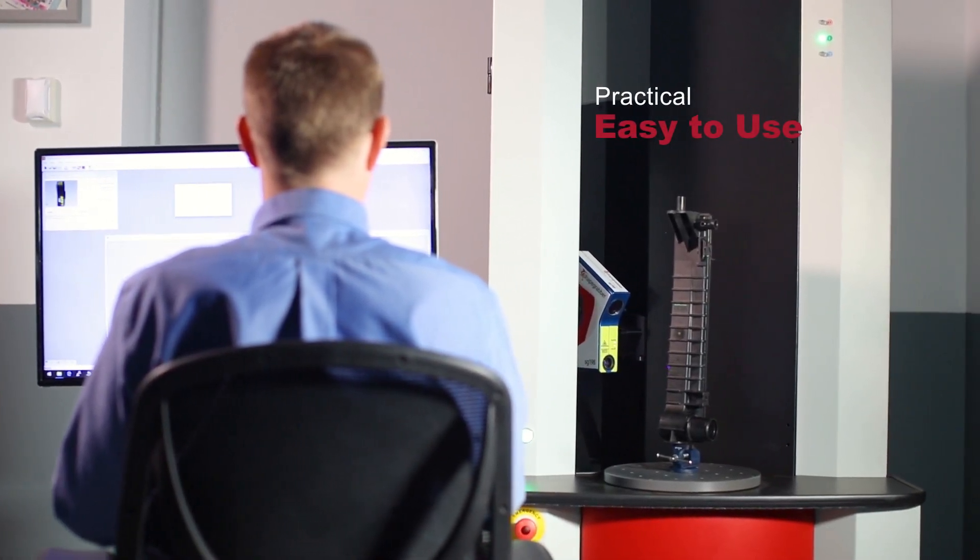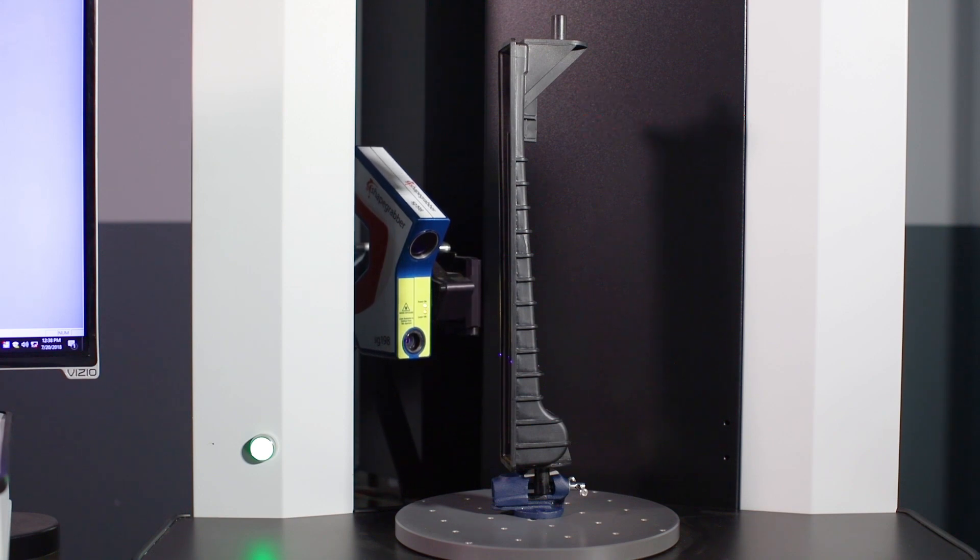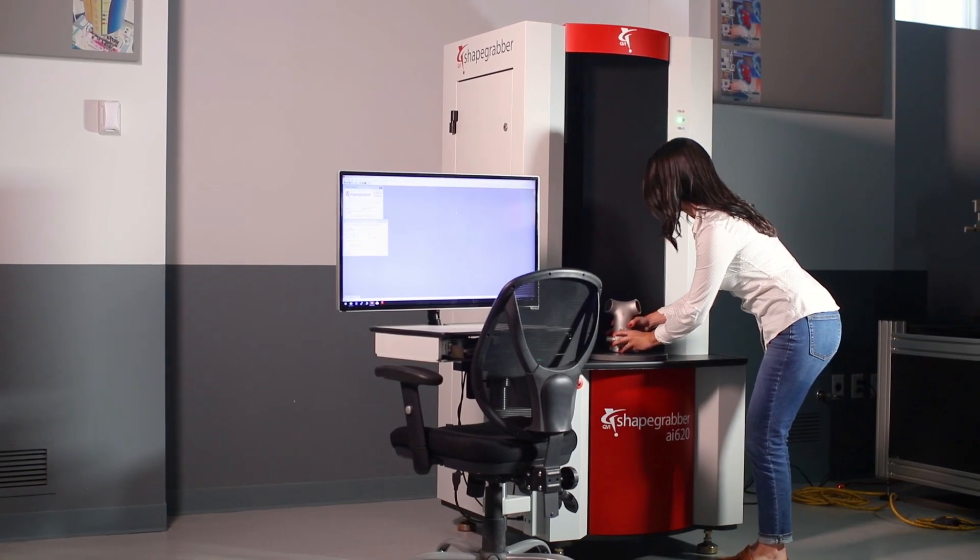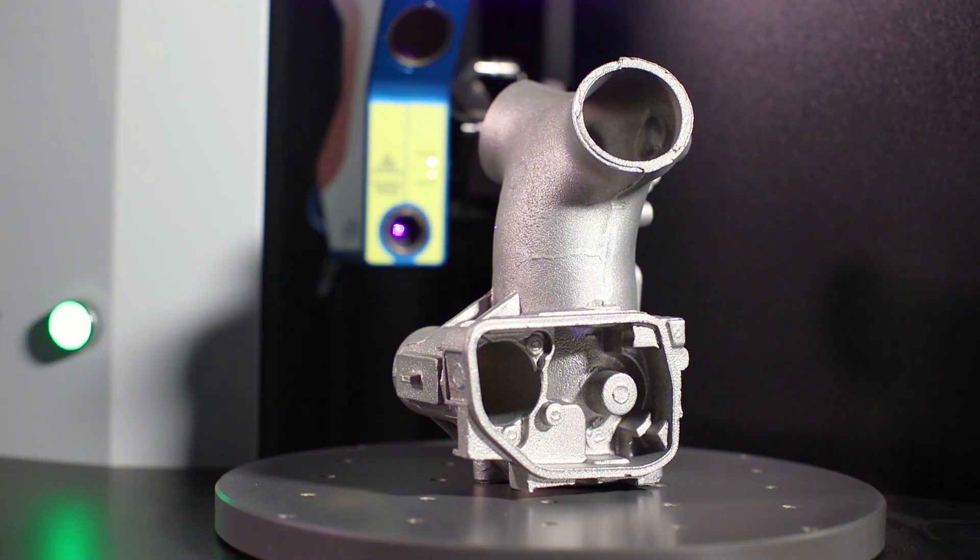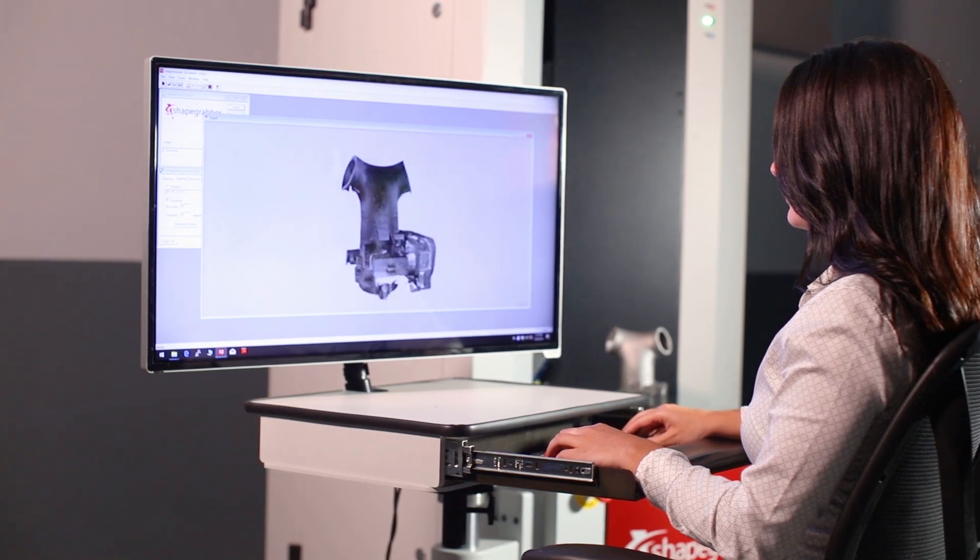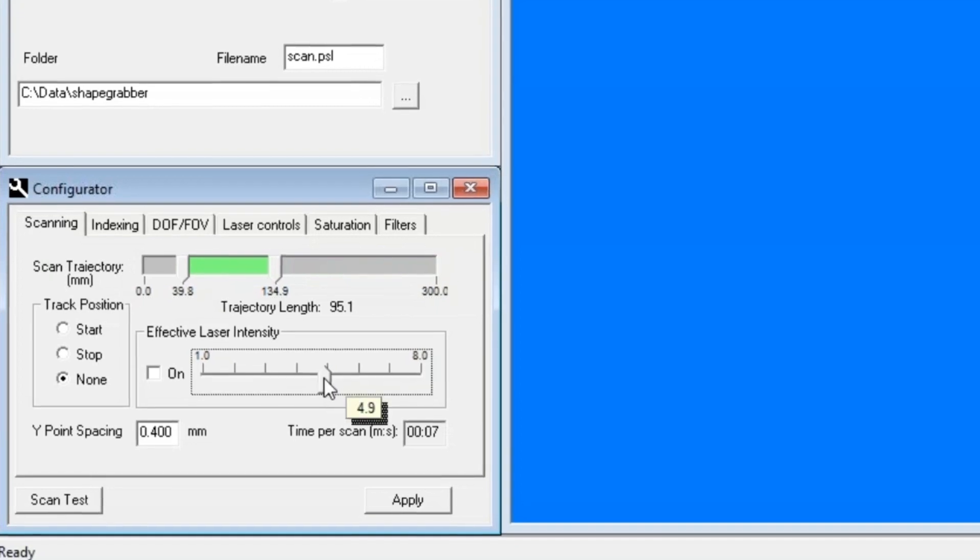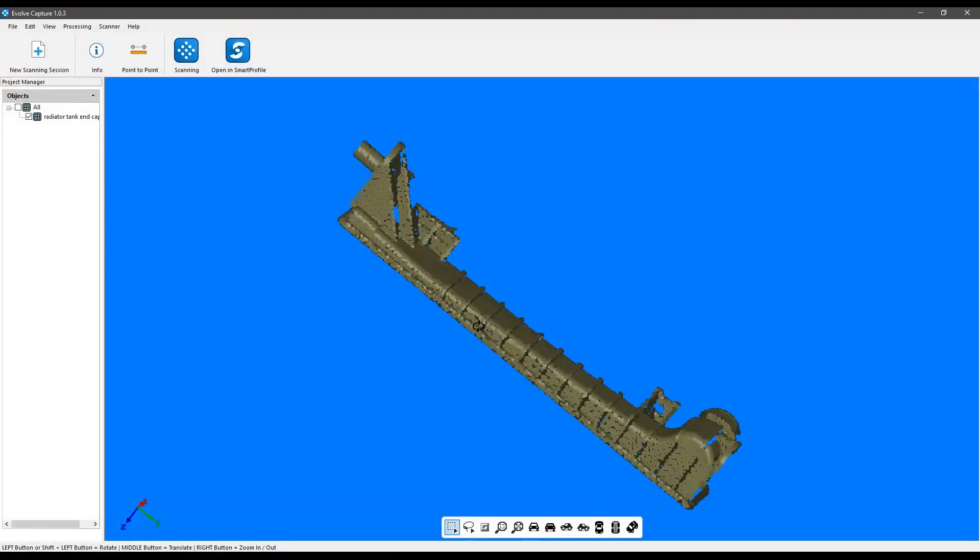ShapeGrabber AI620 is automated and simple to use. The open work envelope provides useful visual feedback and makes part loading and unloading fast and easy. Scans can be initiated with one click, delivering consistent measurement results by any operator. Scanning parameters are easily selected and saved. There is no need to write special code. The same parameters can be used for subsequent parts, delivering accurate results time after time.